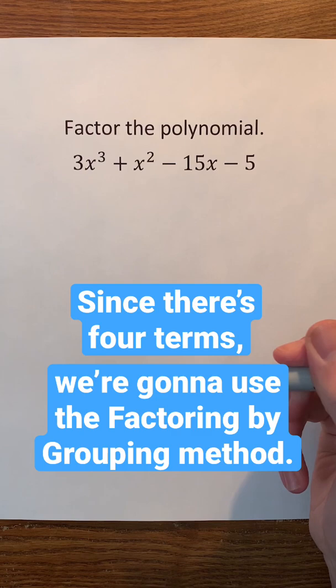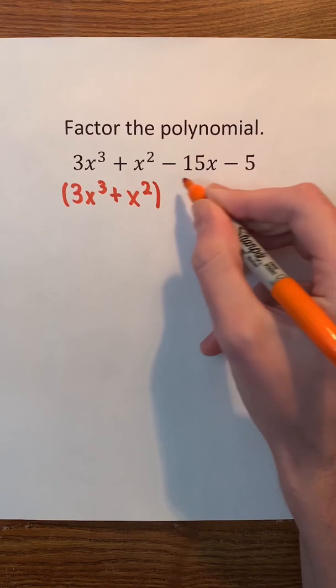We have to factor this polynomial. Since there's four terms, we're going to use the factoring by grouping method. We're first going to group these first two terms, and then these last two terms.